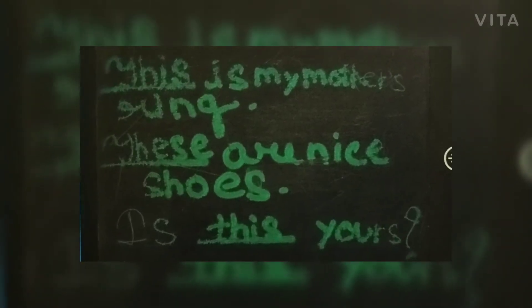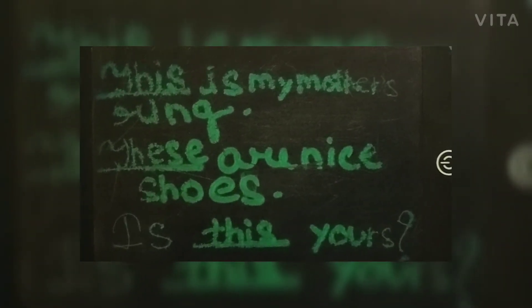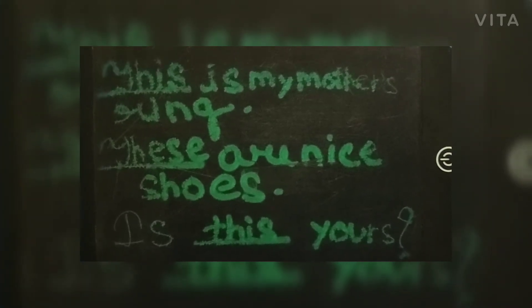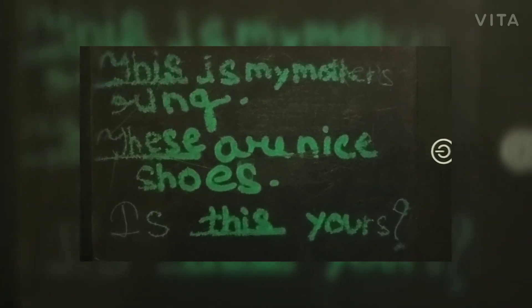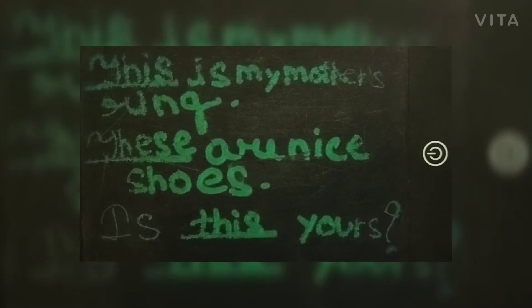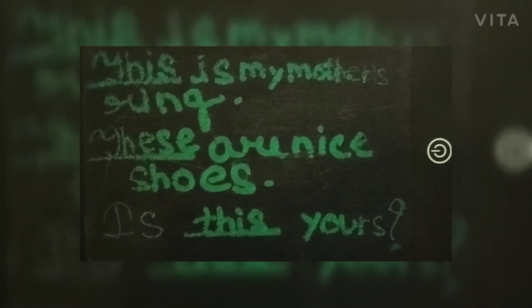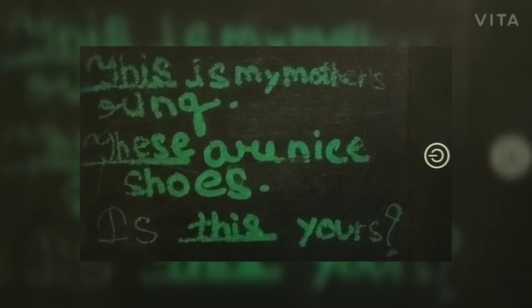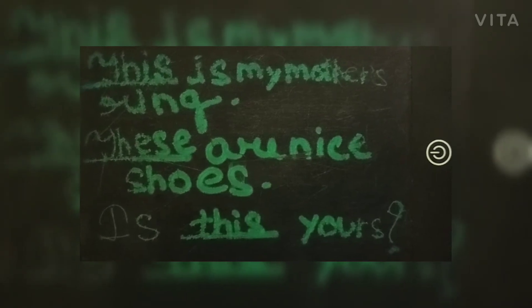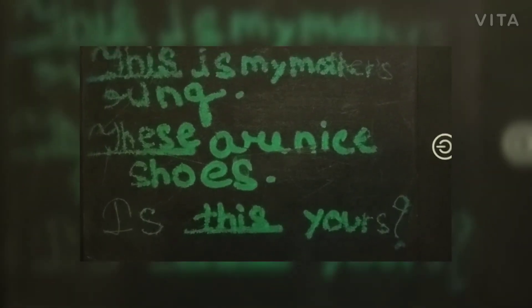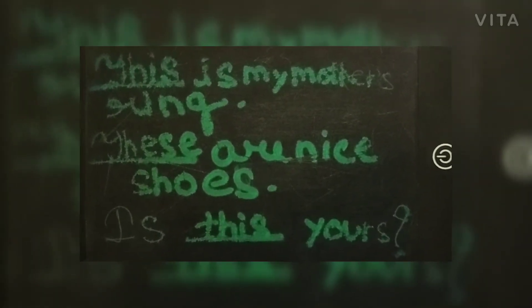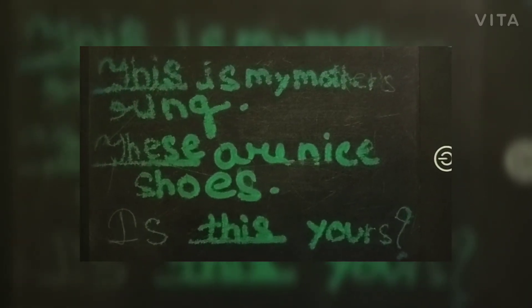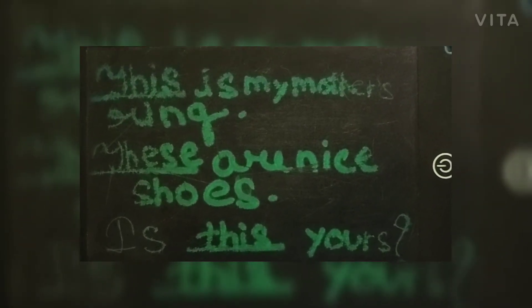So let's see the answers. The first one is: this is my mother's ring. This is a demonstrative pronoun. The second one is: these are nice shoes. These is also a demonstrative pronoun. And the third one is: is this yours? This is also a demonstrative pronoun.